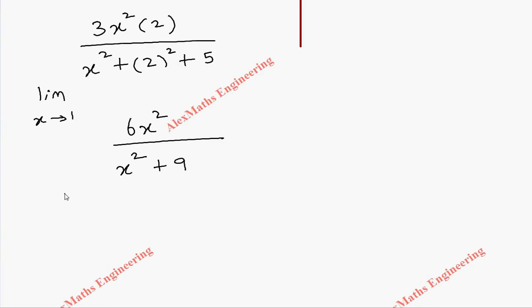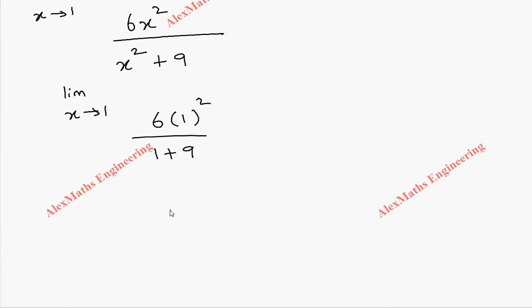Now we will substitute the value of x as 1. So this gives us 6 into 1 square by 1 plus 9. Totally the numerator is 6, denominator is 10. After reducing it, we get 3 by 5.